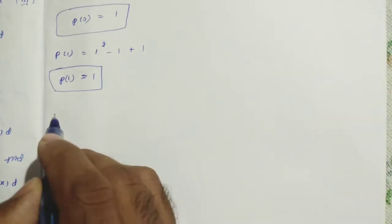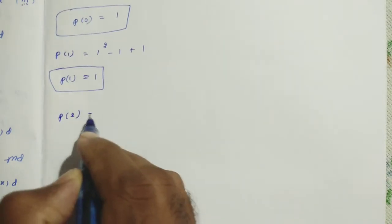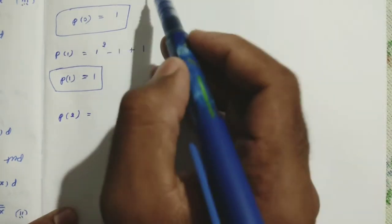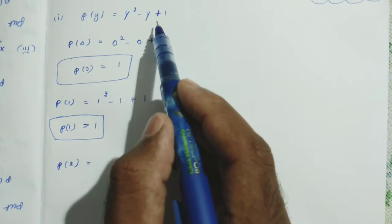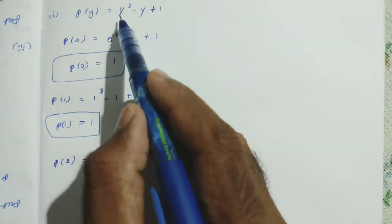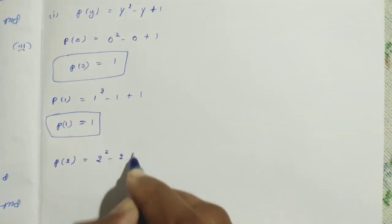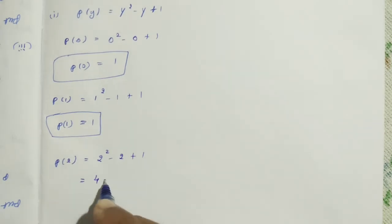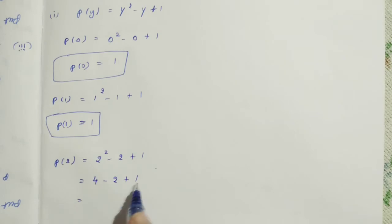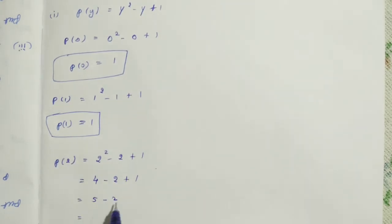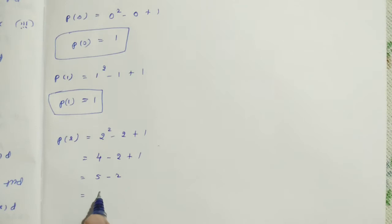Next, P of 2. Now, in this polynomial, we should substitute 2 instead of the y variable. So: 2 squared minus 2 plus 1. 2 squared equals 4, so 4 minus 2 plus 1. Add the positive numbers first: 4 plus 1 equals 5, so 5 minus 2. Different signs, so subtraction: 3. The larger number is positive, so P of 2 equals 3.